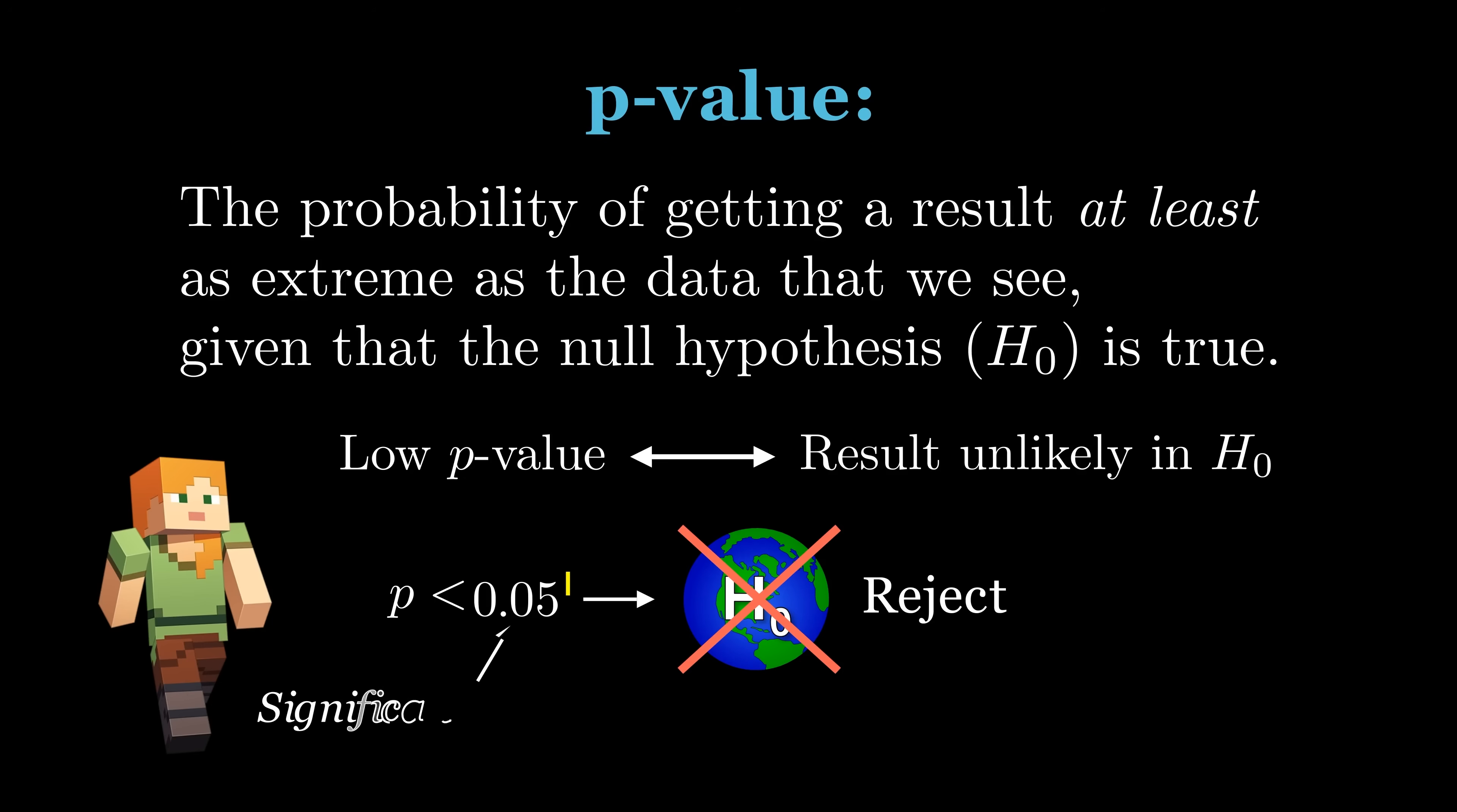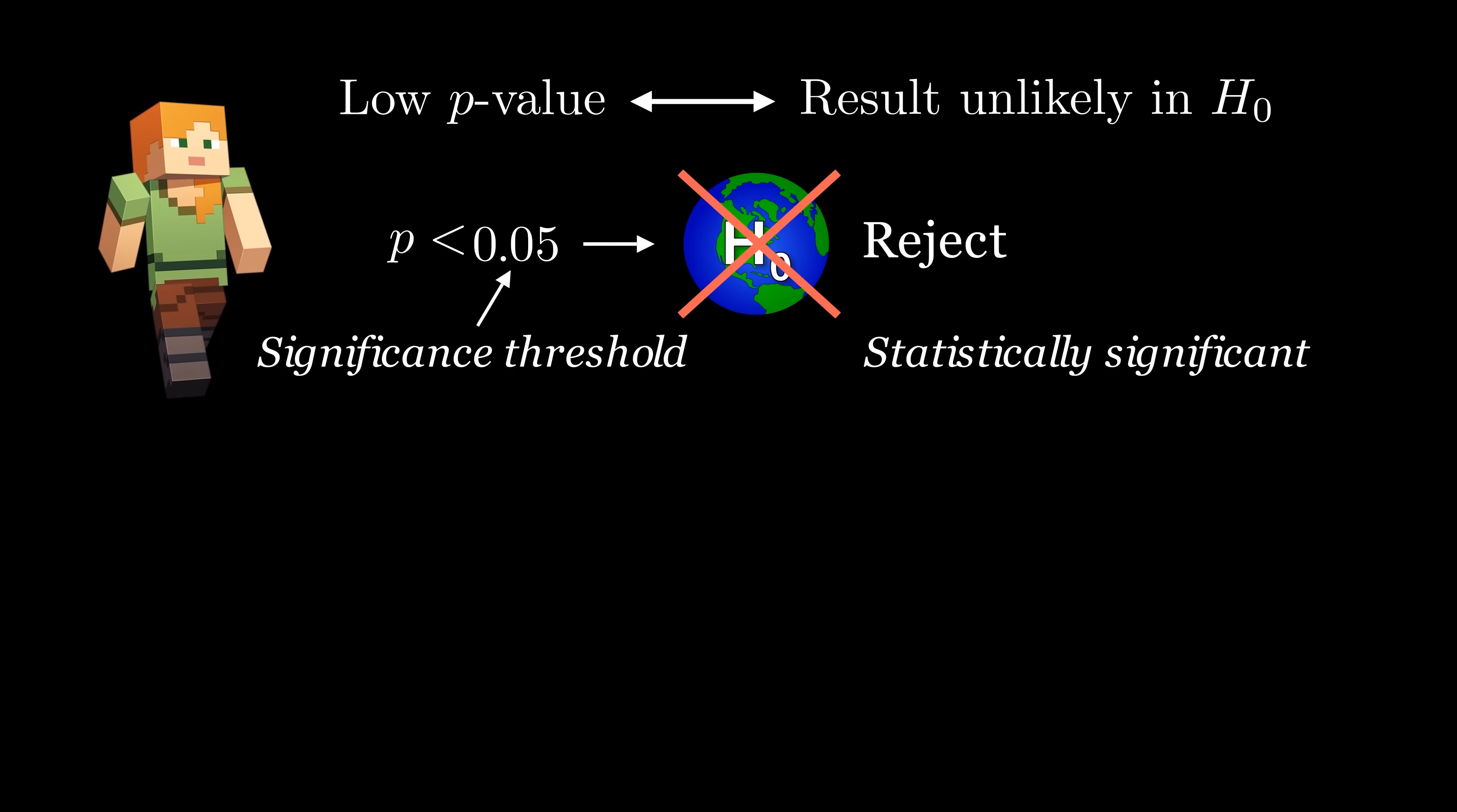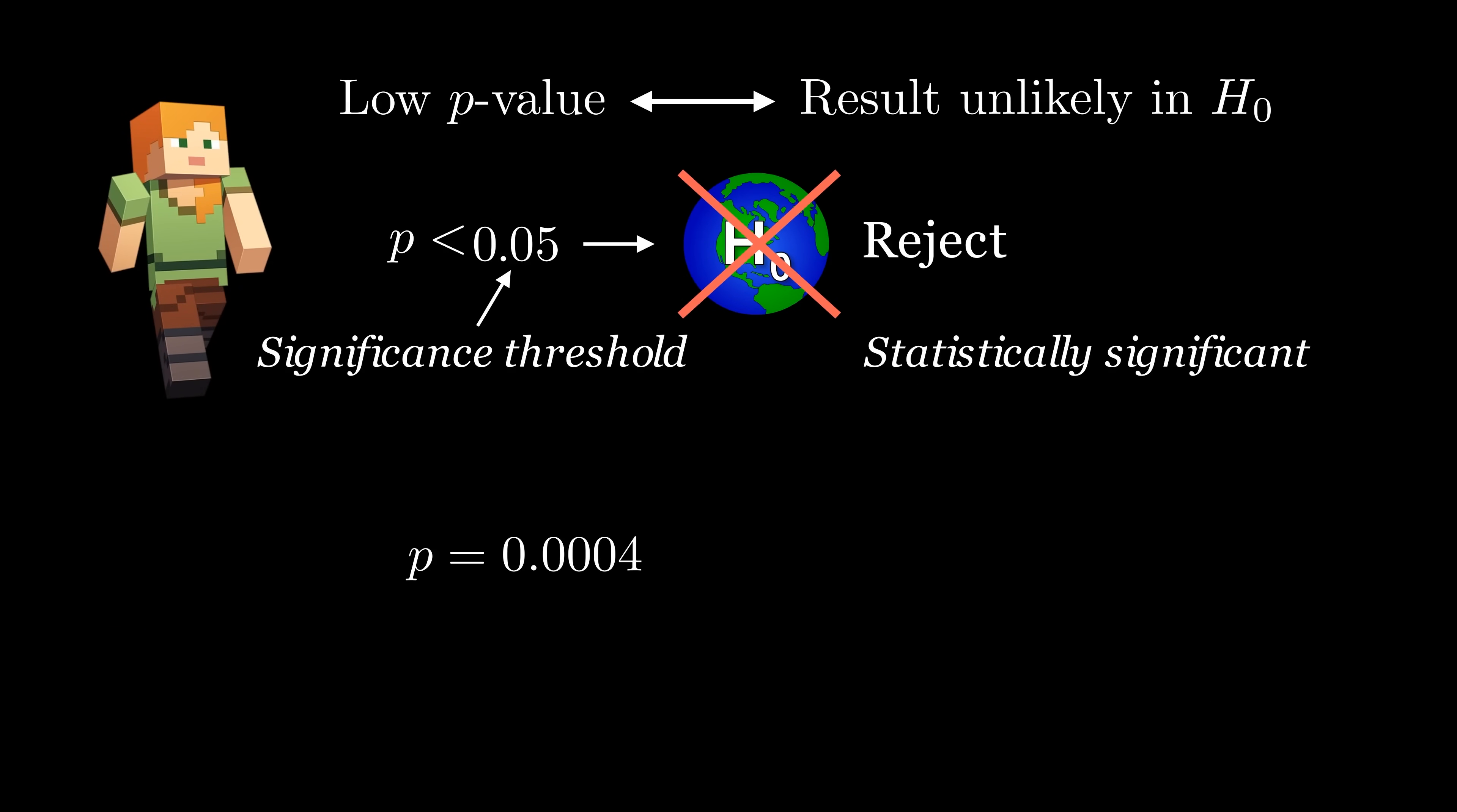This threshold is called a significance threshold, and if our p-value is lower, we say that our hypothesis test is statistically significant. Since our p-value is 0.0004, it's going to be lower than any reasonably chosen threshold, and so we reject the null hypothesis and conclude that our friend very likely cheated.